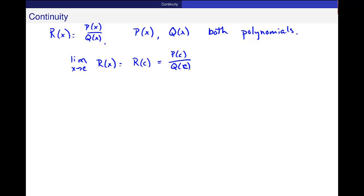what we said before for rational functions. Do you remember for rational functions, we had a function r(x) equals p(x) over q(x), where p and q are both polynomials. And for rational functions, we had the limit as x approaches c of r(x) is equal to r(c), which is p(c) over q(c), when q(c) is not equal to 0, right?